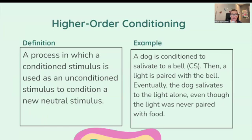Higher order conditioning: a process in which a conditioned stimulus is used as an unconditioned stimulus to condition a new neutral stimulus — that's like a tongue twister, honestly. A dog is conditioned to salivate to a bell, then a light is paired with the bell, and eventually the dog salivates to the light alone, even though the light was never paired with the food.